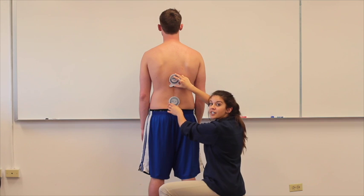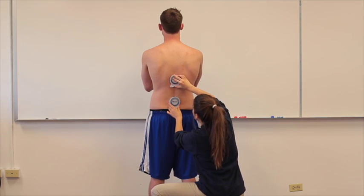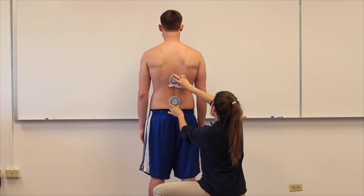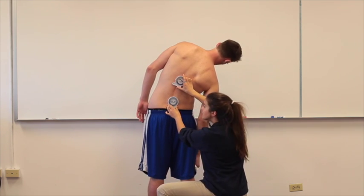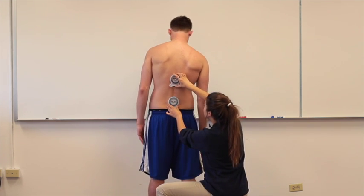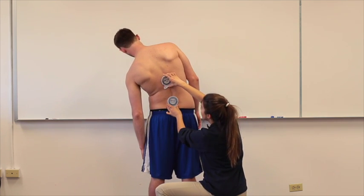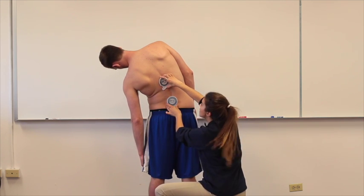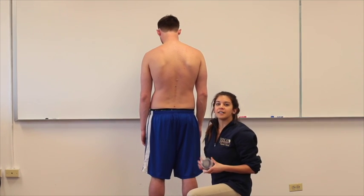I'm now going to assess the lateral flexion in Connor's lumbar region, so I'm going to zero these inclinometers out. Now Connor, go ahead and put your arms by your side, and if you could just bring the palm of your right hand down towards that knee, leaning all the way over. The bottom still reads zero and the top is at 45 degrees. Go back to neutral, I'm going to reset the inclinometers. And now go ahead and do the same thing on the other side. I have 30 on the top and 5 on the bottom, so the difference is 25. These both fall into the normal ranges for lumbar motion in lateral flexion.